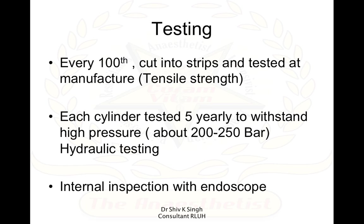The testing of cylinders is very important. Every 100th cylinder is tested at the manufacturer for tensile strength according to strip testing. Every cylinder — not just every 100th — is tested five-yearly to withstand very high pressures of about 200 to 250 bar. This includes both hydraulic testing and tensile strength testing. All cylinders are also inspected from inside using an endoscope to look for any cracks in the wall.